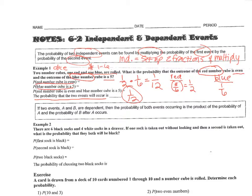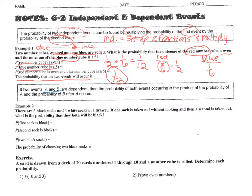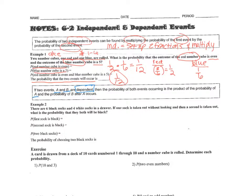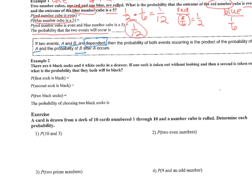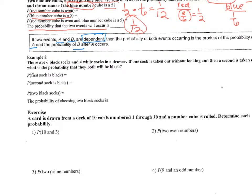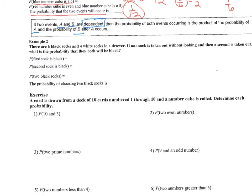Now for dependent events: if two events A and B are dependent, then the probability of both occurring is the product of the probability of A and the probability of B after A occurs. Unlike independent events where the two fractions are separate scenarios, with dependent events the second fraction is affected by whatever happened the first time.